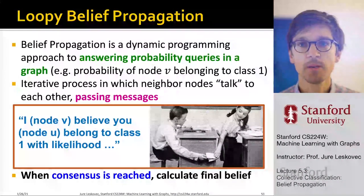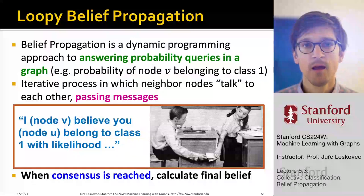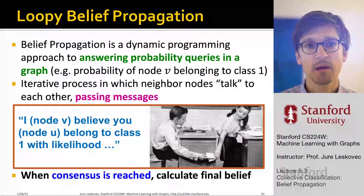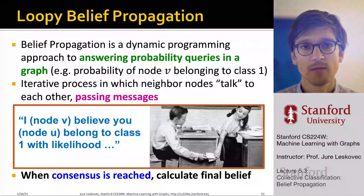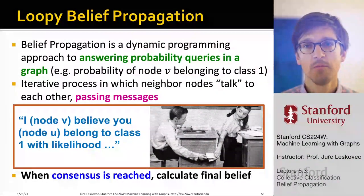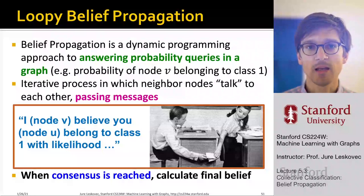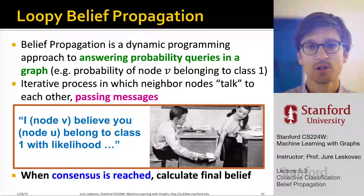Let me give you some context on where loopy belief propagation comes from. Belief propagation is a dynamic programming approach to answering probabilistic queries in a graph — specifically, computing the probability that a given node belongs to a given class. It's an iterative process in which neighboring nodes talk to each other by passing messages.